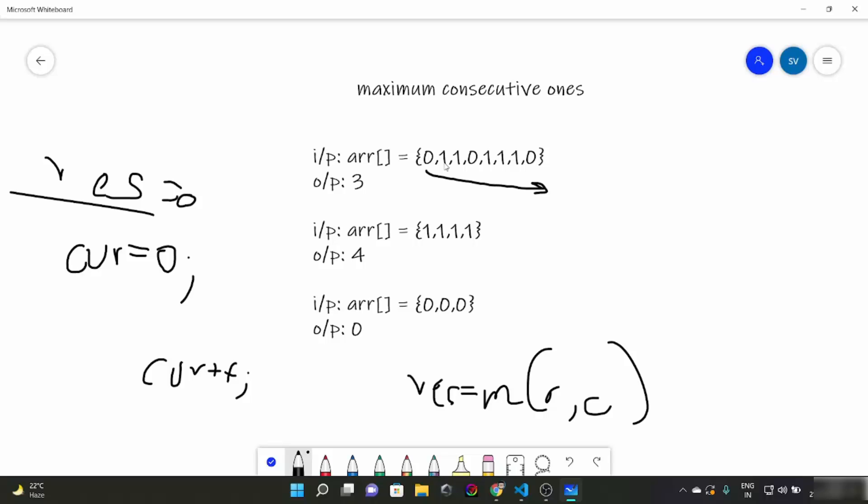So here we found a 1, we increase curr, curr is 1 now. Max of res and curr is curr obviously, so our res also becomes 1. Now we come here, curr becomes 2, res also becomes 2. Now we come here, as soon as we encounter a 0 what we are going to do, we are going to reset the value of curr. Now curr becomes 0.